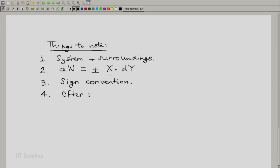X here is an intensive property of our system, whereas the second component, dY, in which Y is involved, Y is an extensive property.